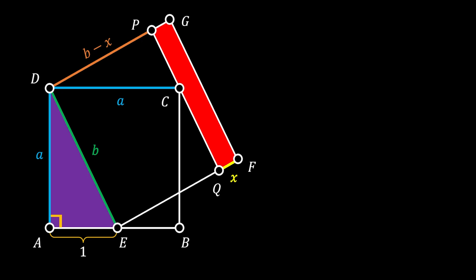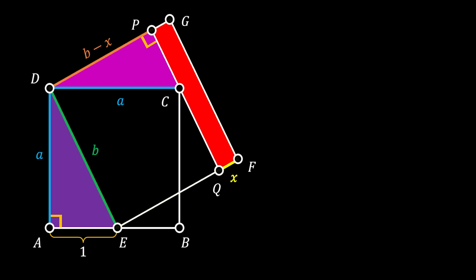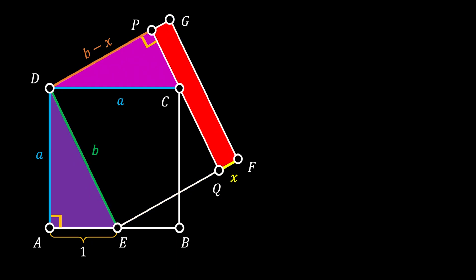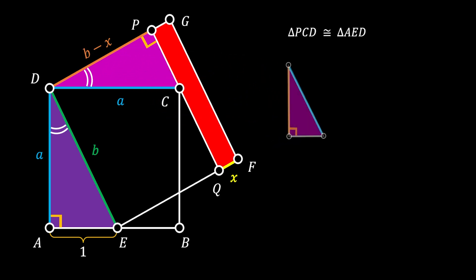Our sketch contains two important right triangles: the purple right triangle AED and the pink right triangle PCD. These two triangles are similar to each other because the bigger square has been rotated around point D, meaning the angles at point D are the same — they represent the angle of rotation. Since the angles at points A and P are right angles, triangle PCD must be similar to triangle AED.